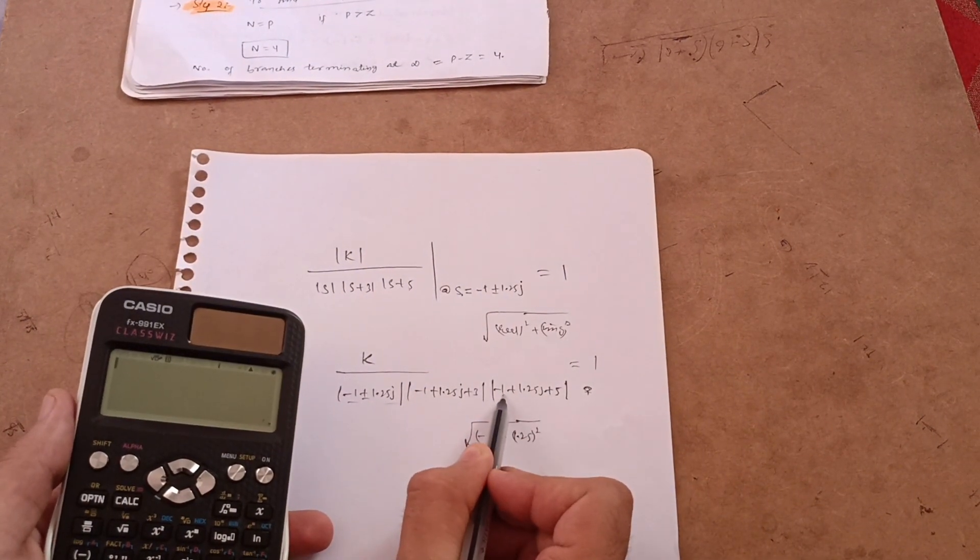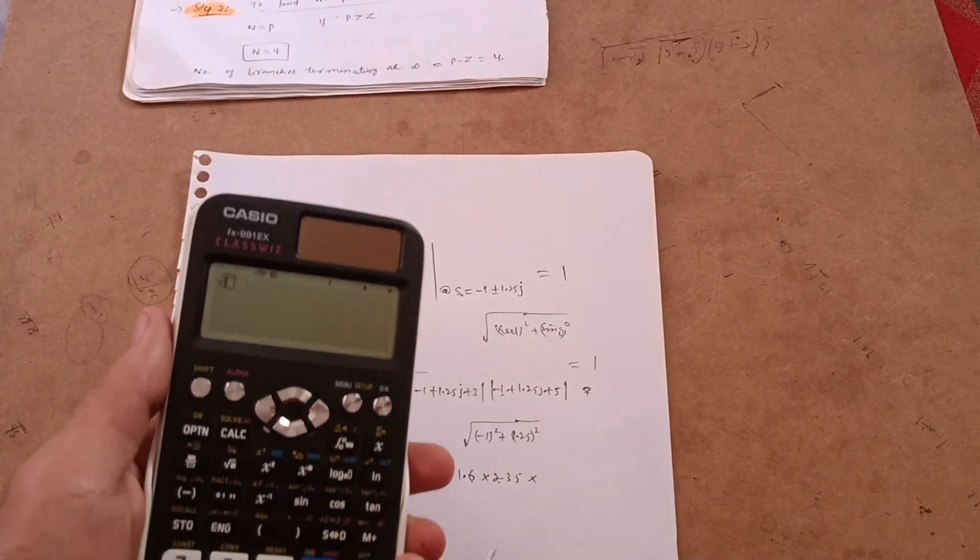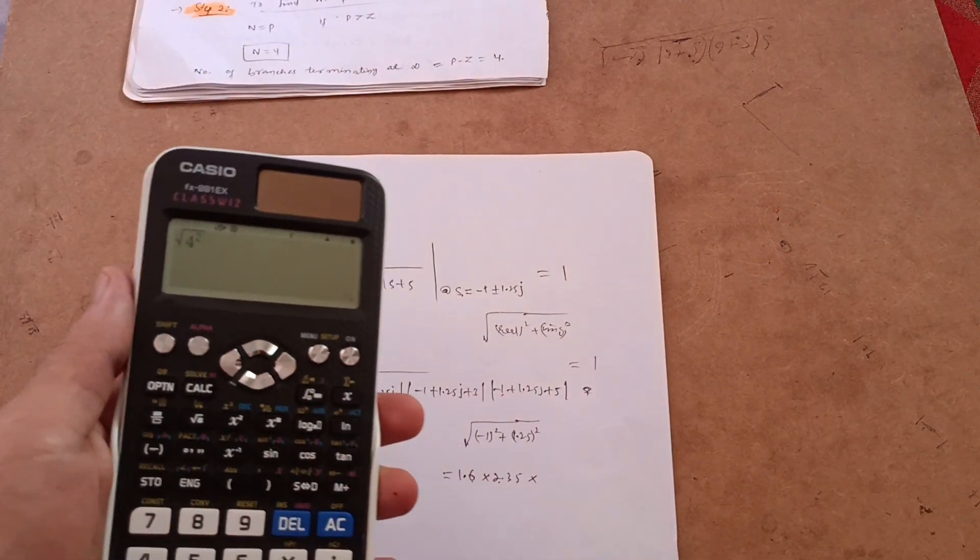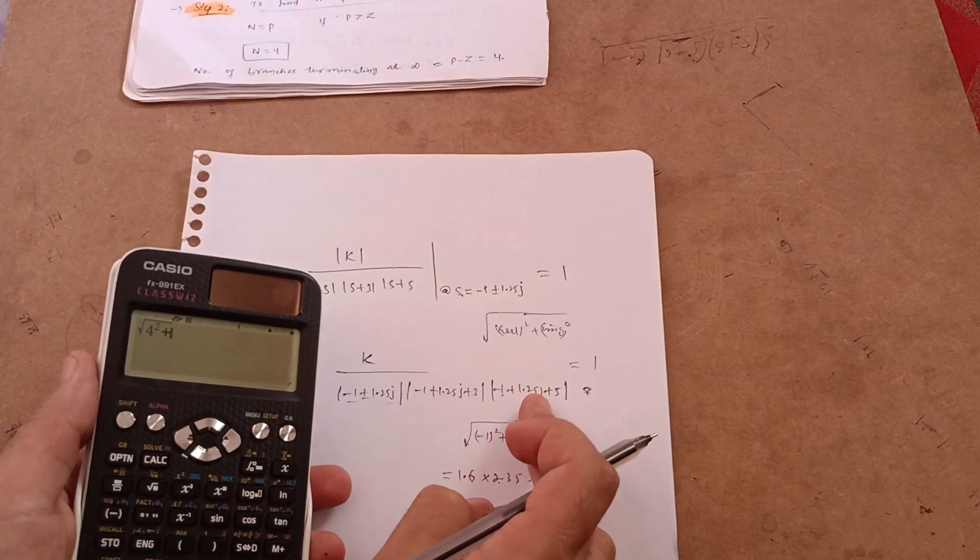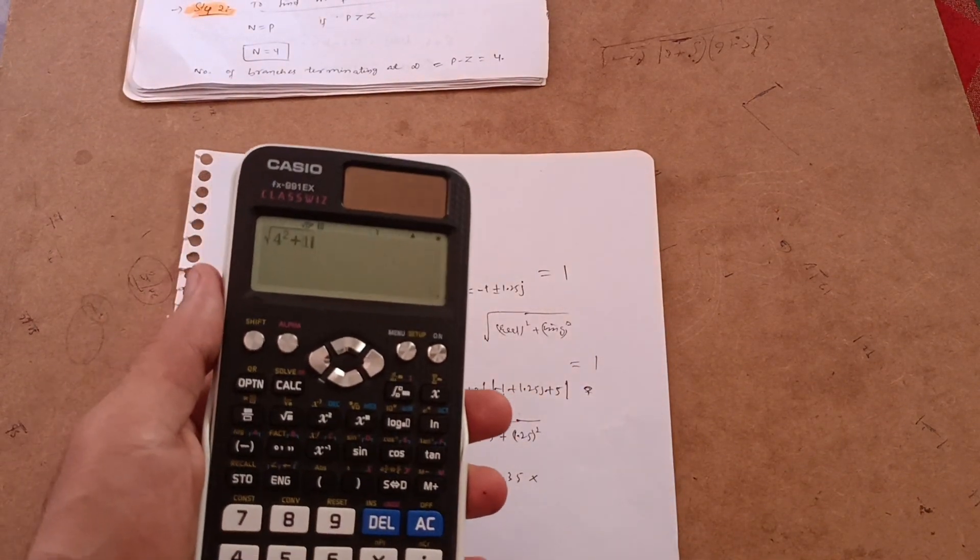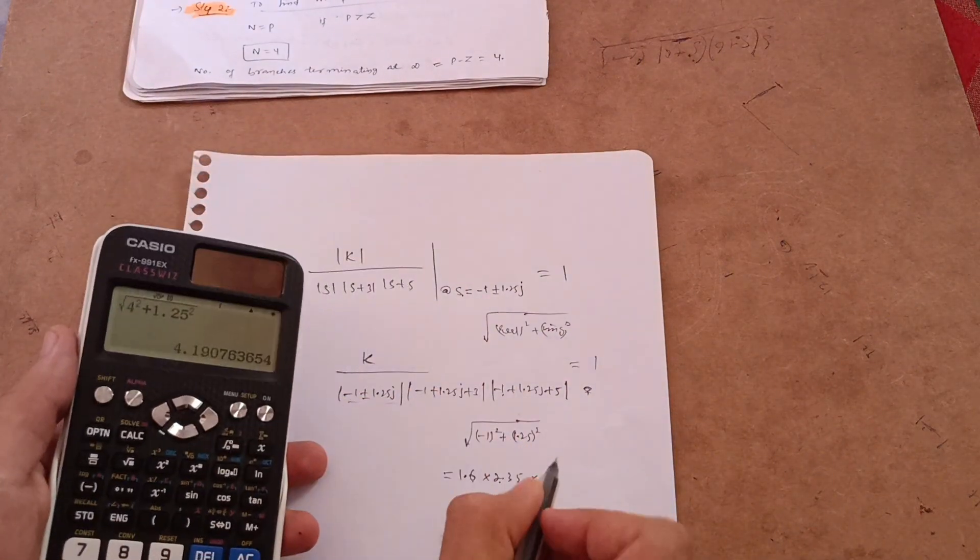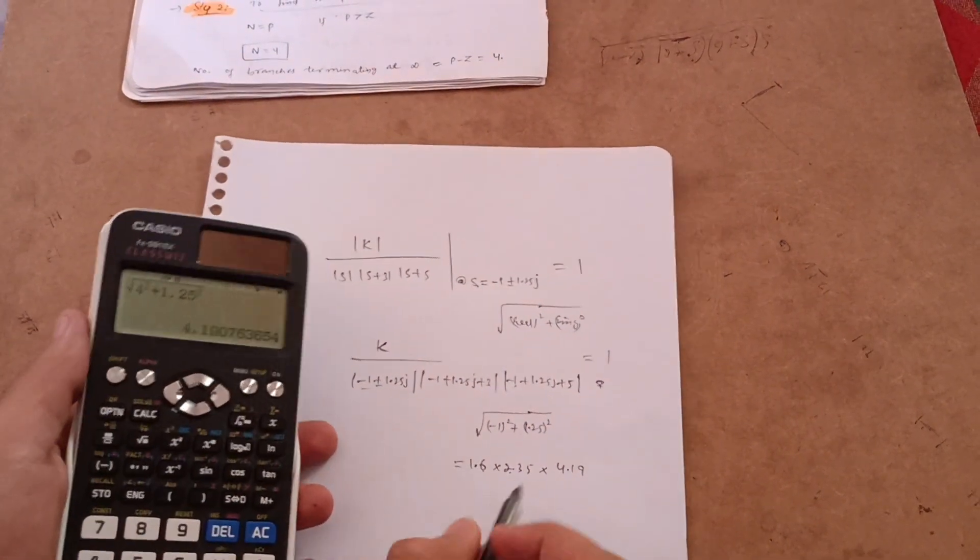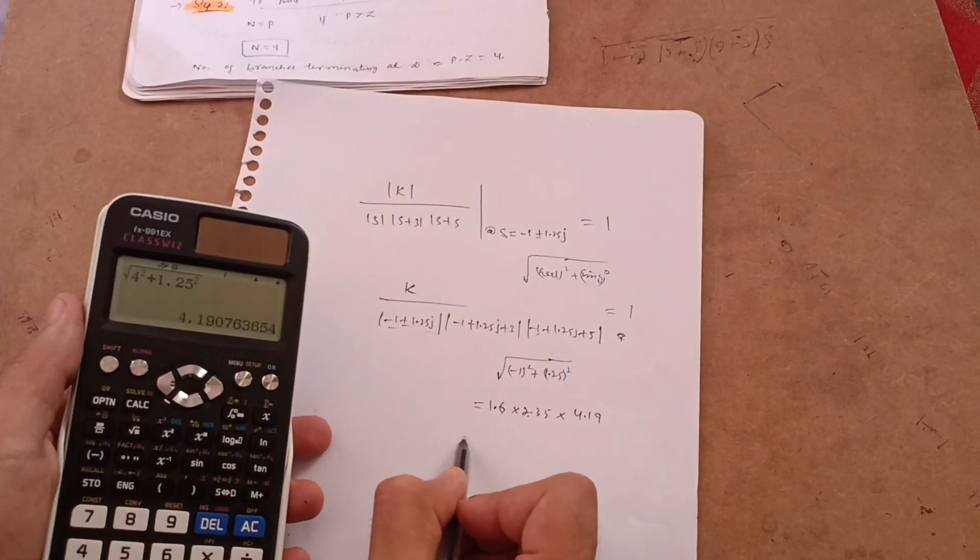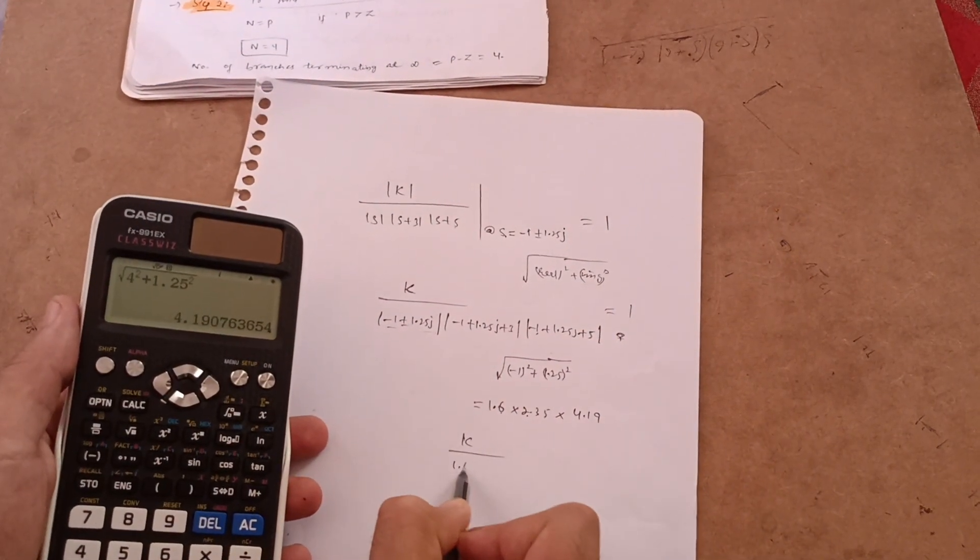That becomes your real part, 4, so under root of 4 square, plus imaginary square 1.25j. So it is your imaginary part, that is 1.25 whole square. You will get the value as 4.19. When you calculate these, after getting these values, you write down k upon these values.